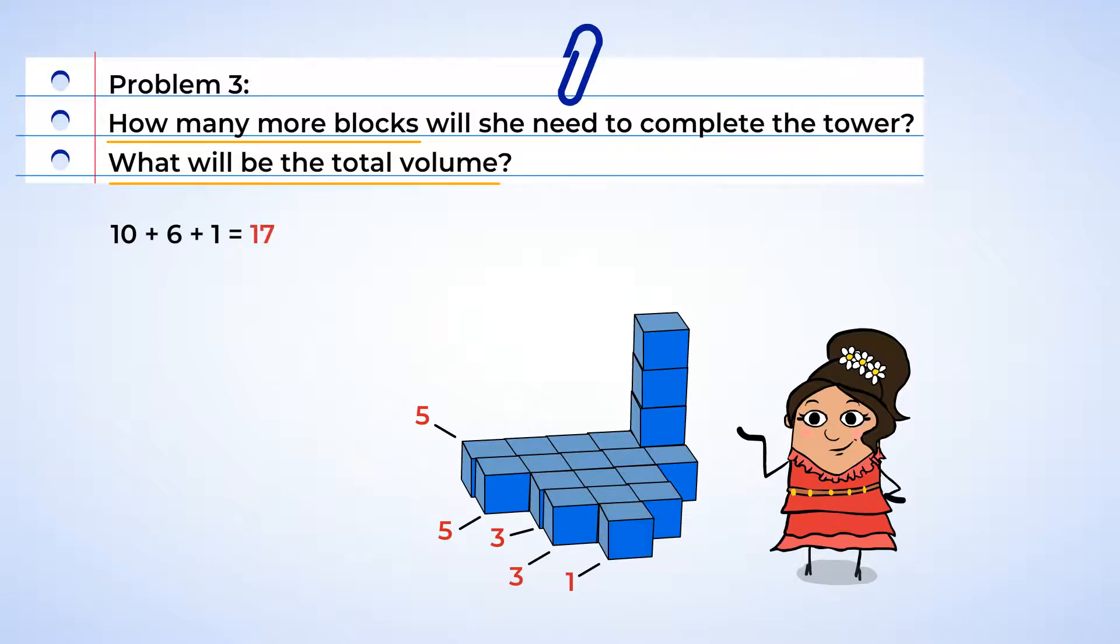So Isabella wants to make three more layers for her tower. 17 times three is 51. But she doesn't need 51 more blocks because she's already set up three.